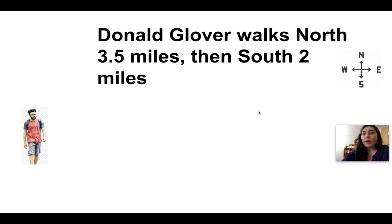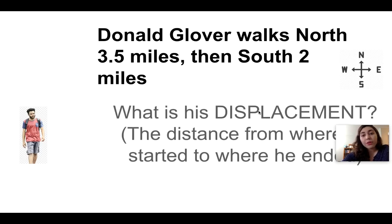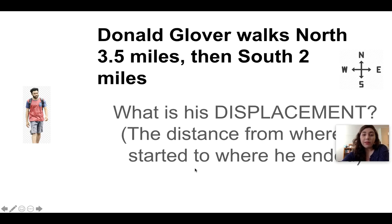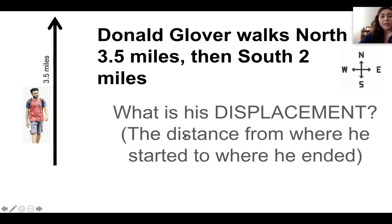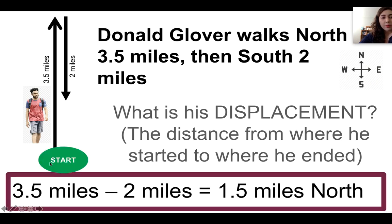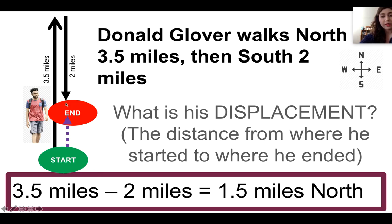Now we want to find his displacement. He goes north 3.5 miles and then south two miles. His displacement is the difference between where he starts and where he ends. Donald Glover's starting point is at the bottom of the page and his ending point is somewhere in the middle, so we draw a direct line from start to end — that's your vector — and this vector points in the direction it's going, towards the end.